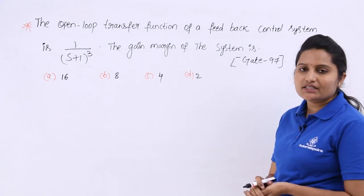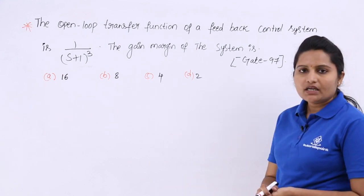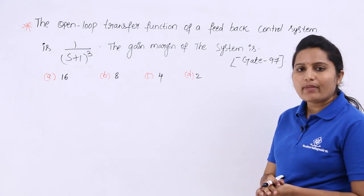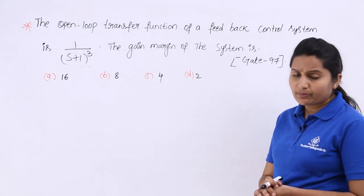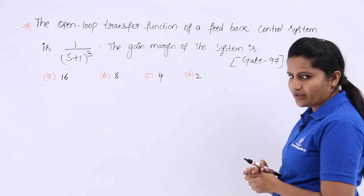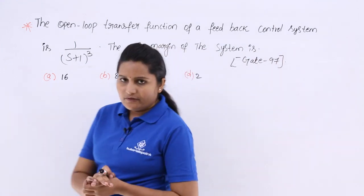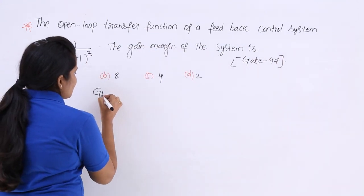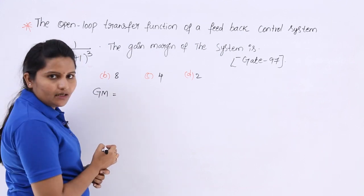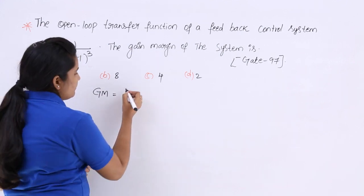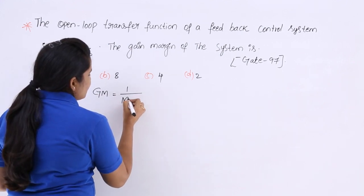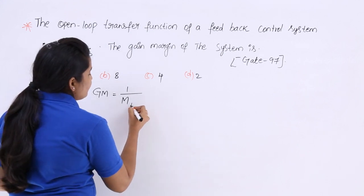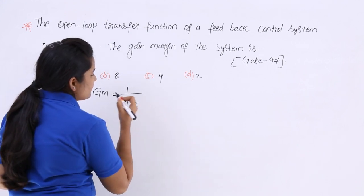Here we need to find out the gain margin. As discussed in the last class, gain margin is the reciprocal of the magnitude of the Nyquist plot at the phase crossover frequency. The formula for gain margin is equivalent to this reciprocal of magnitude of the Nyquist plot at phase crossover frequency.